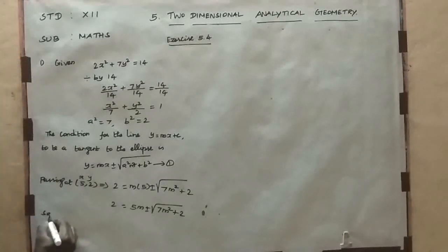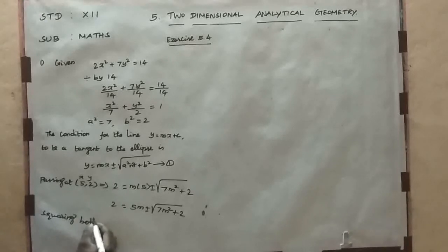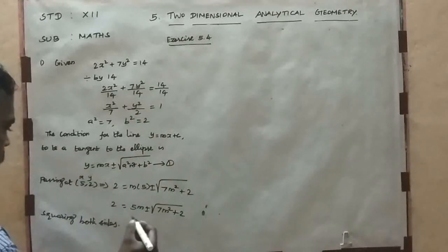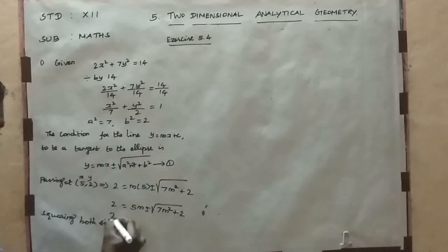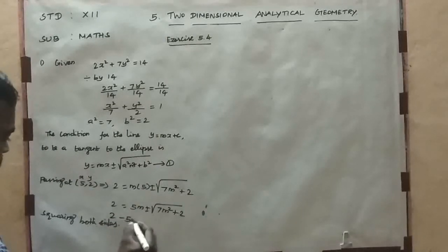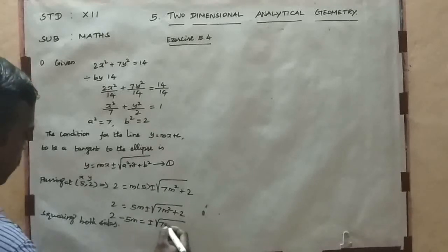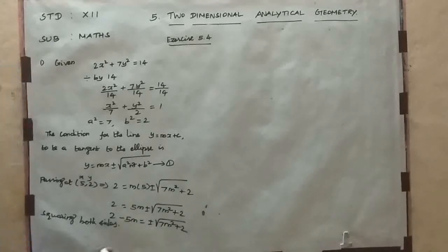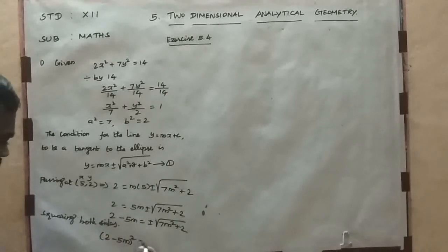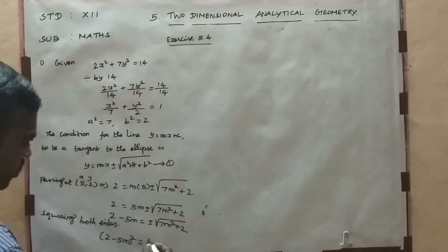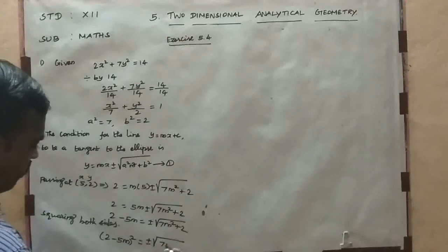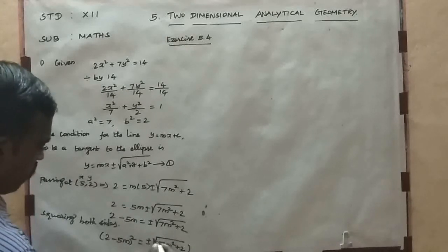Now squaring both sides. First, rearrange: 2 − 5m = ± √(7m² + 2). Then squaring both sides: (2 − 5m)² = (± √(7m² + 2))².